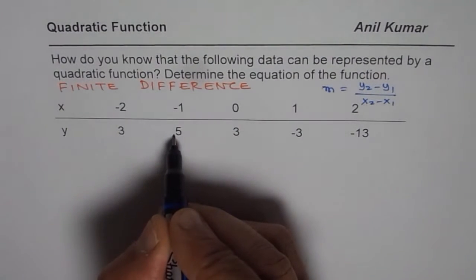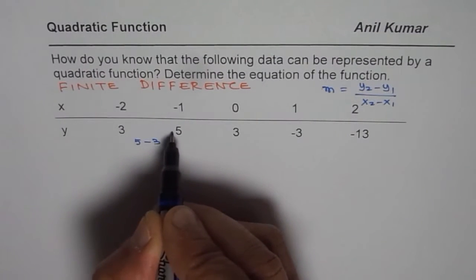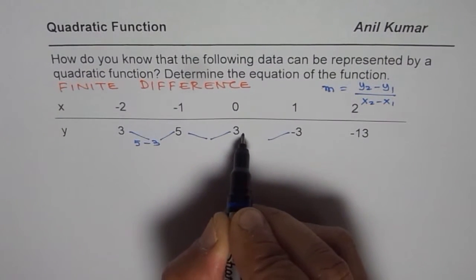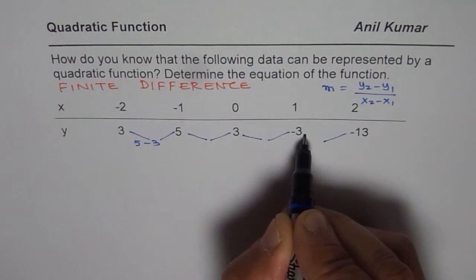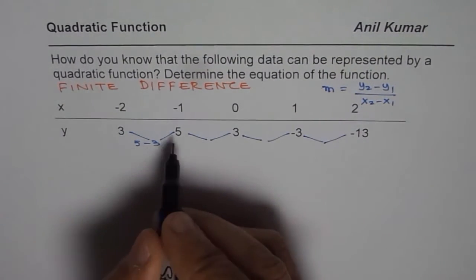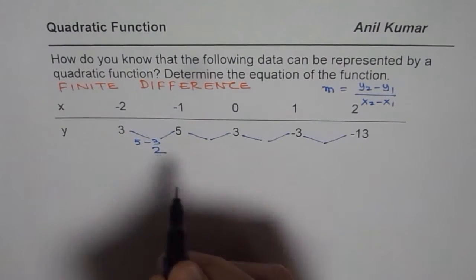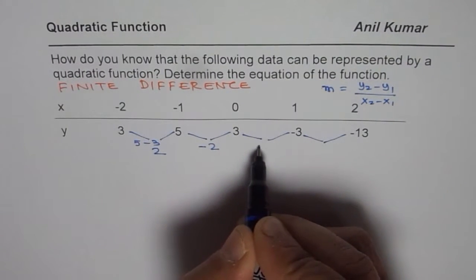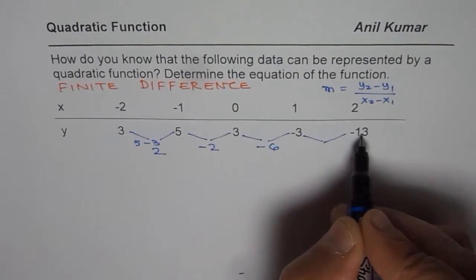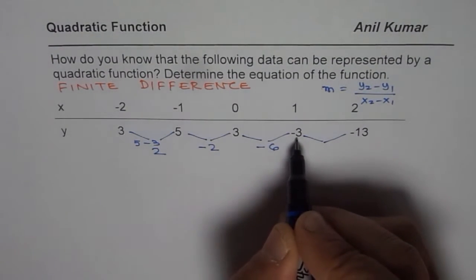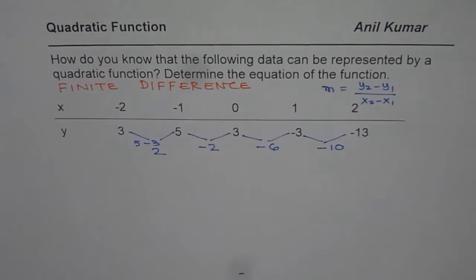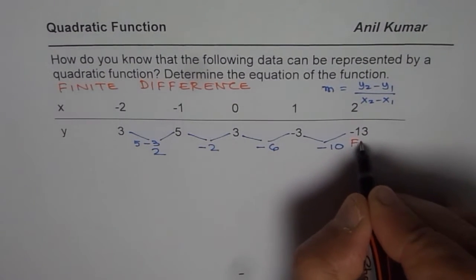So we will do 5 take away 3 — that is y2 minus y1 — and then 3 take away 5, minus 3 take away 3, minus 13 take away minus 3, and write down the results. 5 take away 3 is 2. 3 take away 5 is minus 2. Minus 3 take away minus 3 is minus 6. And minus 13 take away minus 3 becomes minus 10. So those are the first differences.